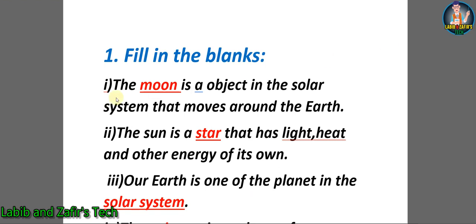Students, at first we will go through some filling the blanks. Number one: The moon is an object in the solar system that moves around the earth. Number two: The sun is a star that has light, heat and other energy of its own.